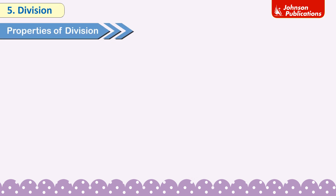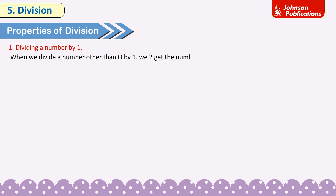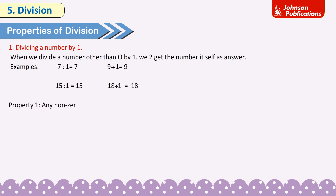Properties of division. Property 1: Dividing a number by 1. When we divide a number other than 0 by 1, we get the number itself as the answer. Examples: 7 ÷ 1 = 7; 9 ÷ 1 = 9; 15 ÷ 1 = 15; 18 ÷ 1 = 18. Any non-zero number divided by 1 gives the number itself as the answer.